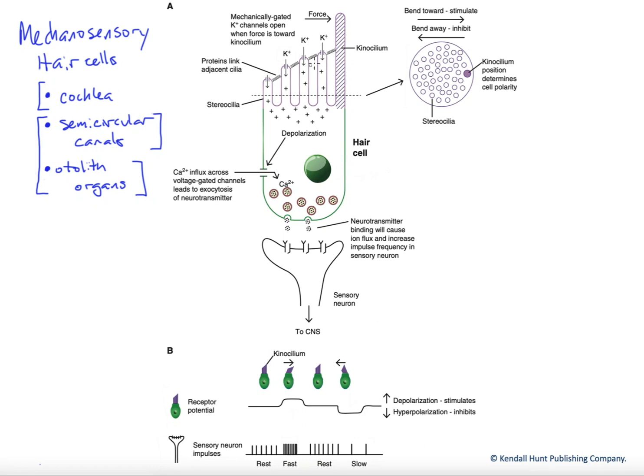Specifically, the hairs of the hair cells are distorted to generate a receptor potential and eventually sensory neuron input to the CNS.